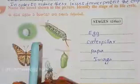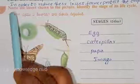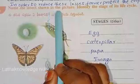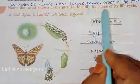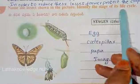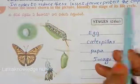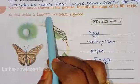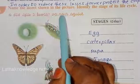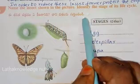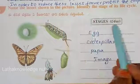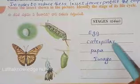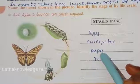Name the insect shown in the picture. Identify the stage of its life cycle. These are the stages of the butterfly life cycle.